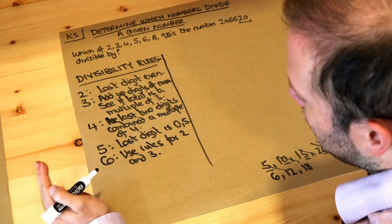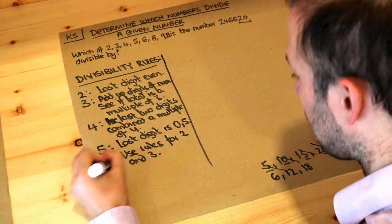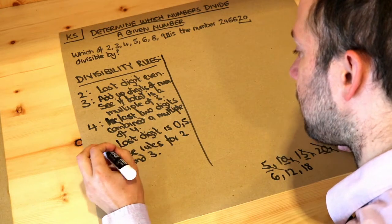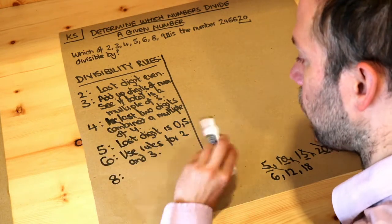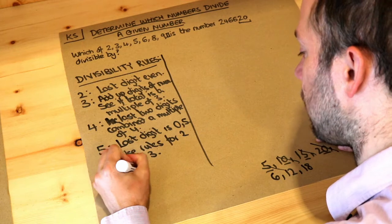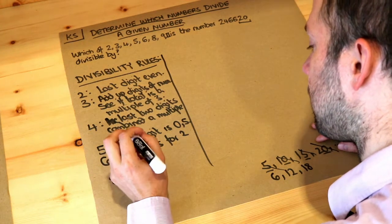Now there isn't really a nice rule for 7 that saves you time, so I'm not going to go through that one. But 8 is very similar to the 4 rule. Are the last three digits combined divisible by 8, multiple of 8?